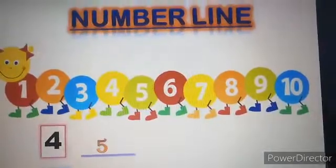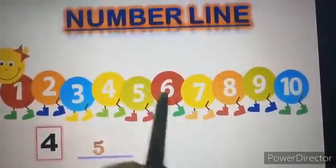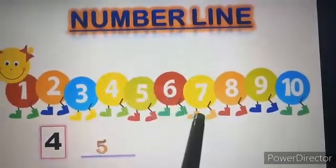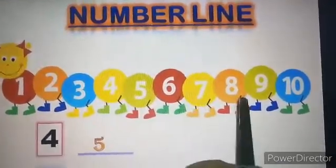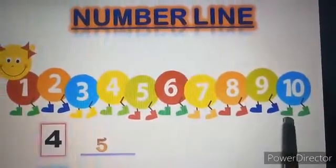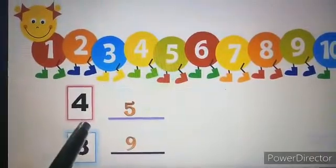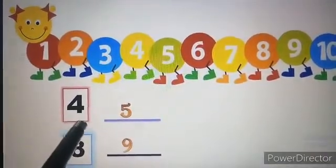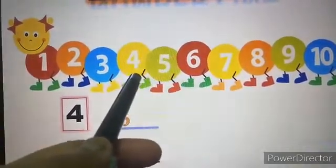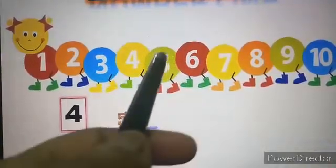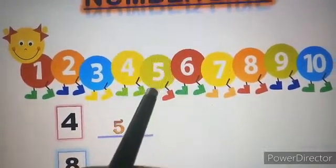Now, suppose if I will ask you what are numbers that comes just after 6, then what you all will say? The numbers are 7, 8, 9 and 10. Then, if I will ask you what number come just after 4? I have asked what number not numbers. So, what you will write? 5.